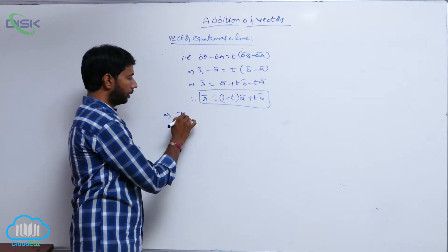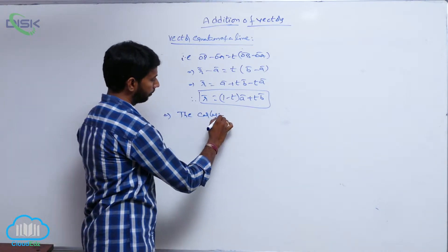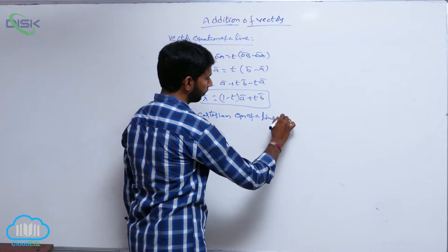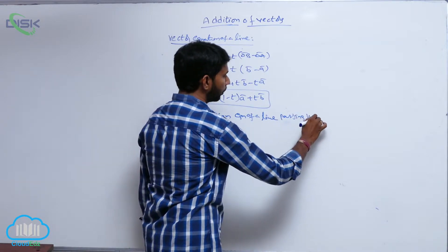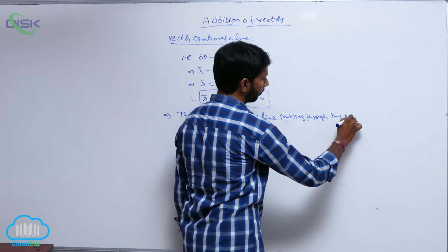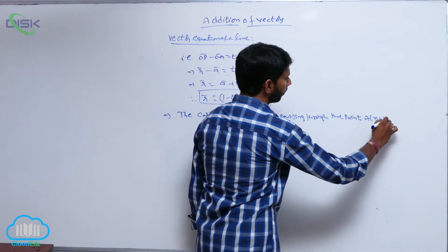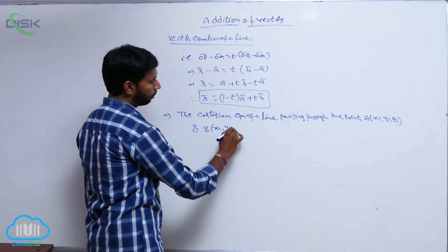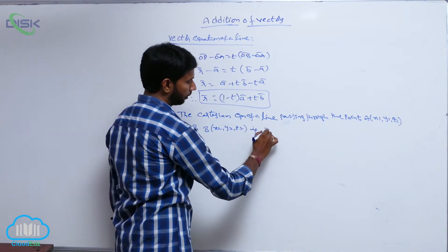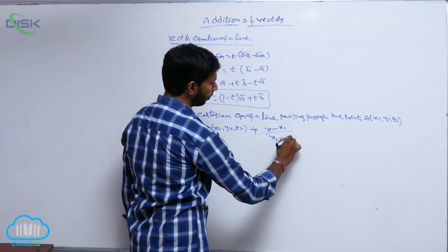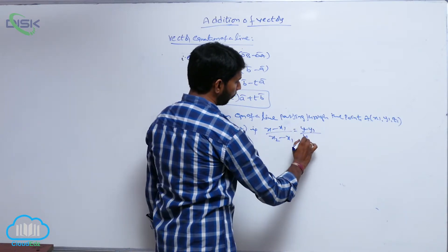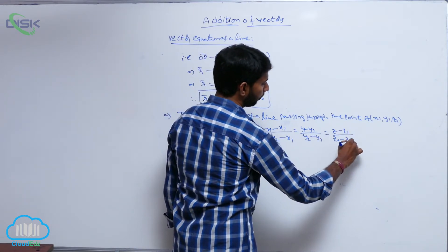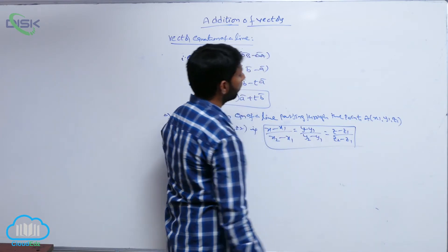Next, the Cartesian equation of a line passing through the points A(x1, y1, z1) and B(x2, y2, z2) is: (x minus x1)/(x2 minus x1) = (y minus y1)/(y2 minus y1) = (z minus z1)/(z2 minus z1). This is the Cartesian equation of a line.